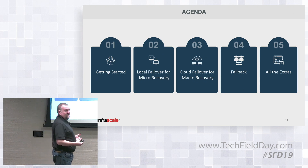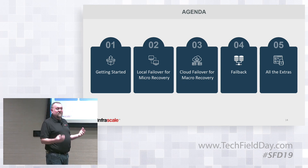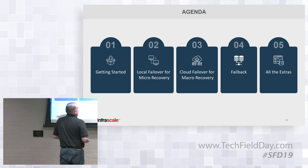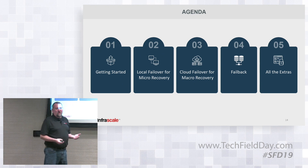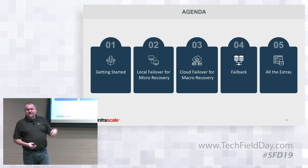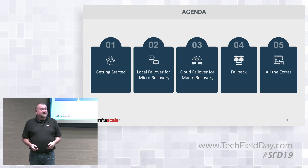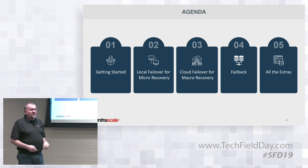Then we'll look at what it looks like to boot stuff up in the cloud and how we access that data running in our cloud. Then we'll talk about failing back — that's one step a lot of people overlook. Getting the data back up, restoring it, running in the cloud — many people automate a lot of that but skip how to get it back on-prem. We've got a one-two-three click method to get it back on-prem, so it's very easy.